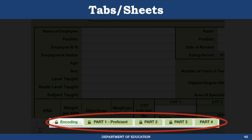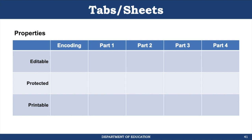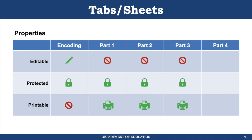The first tab you'll see when you open the tool is the encoding tab. For the encoding tab, it is editable because it contains the data collection form. It is also protected, meaning you cannot modify the sheet structure — only white cells are editable. This form is also non-printable. Parts 1, 2, and 3 are not editable because all data needed for these parts are encoded in the encoding tab. They are all protected and printable. The Part 4 tab is editable but not protected, to allow users to make any necessary changes for crafting development plans, and of course it's printable.